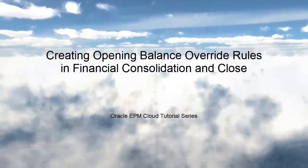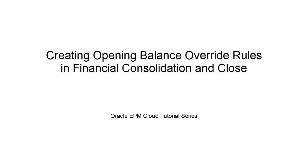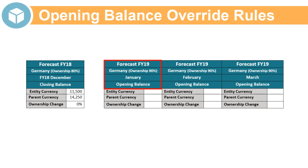In this tutorial, we show you how to create opening balance override rules in Financial Consolidation and Close. When you consolidate data for the first period of a year, opening balances are copied from the last period closing balances of the prior year for the same scenario. Opening balance override rules enable you to specify a different source scenario from which to copy the prior year closing balances.